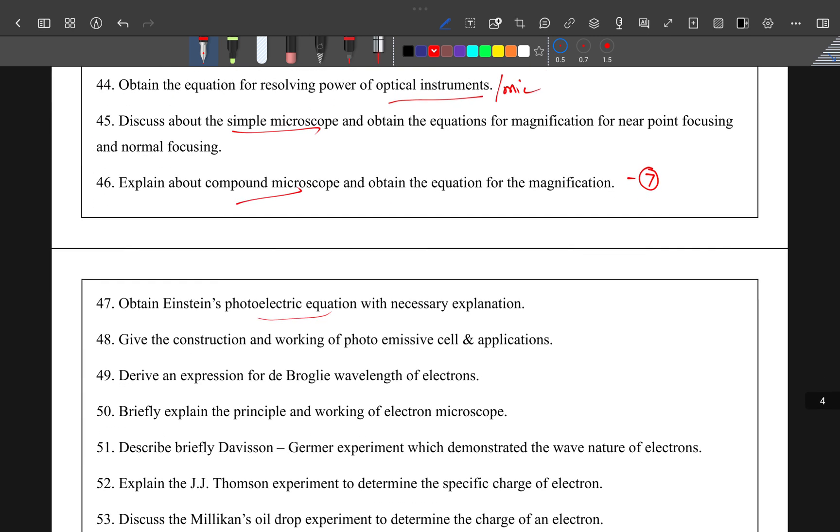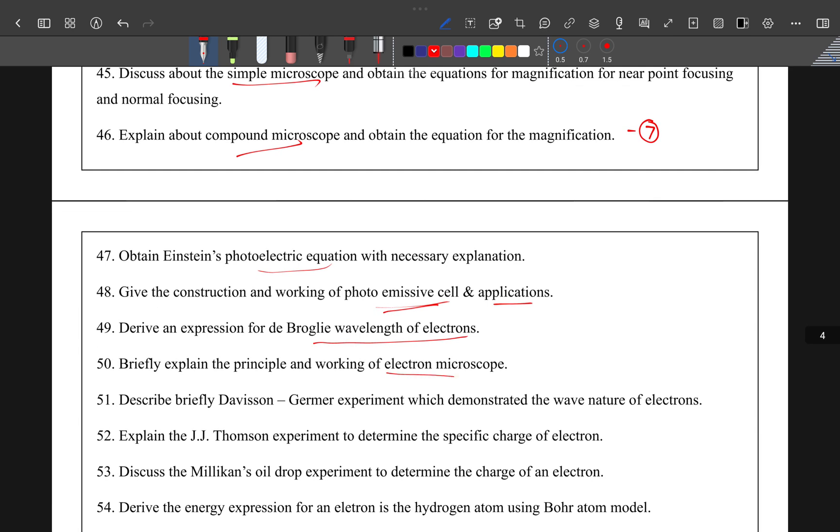Photoelectric equation, photoemissive cells and photocells with applications, De Broglie wavelength of electron, electron microscope, and Davisson and Germer experiment. This is the eighth lesson.